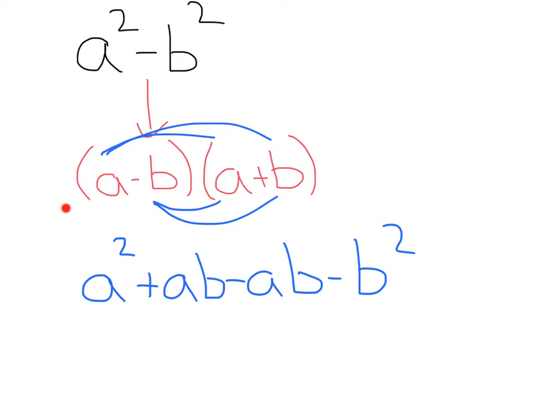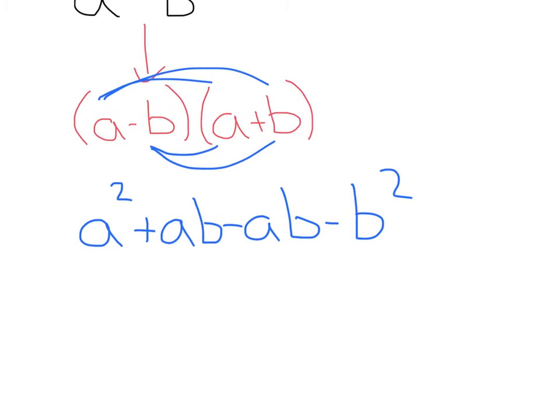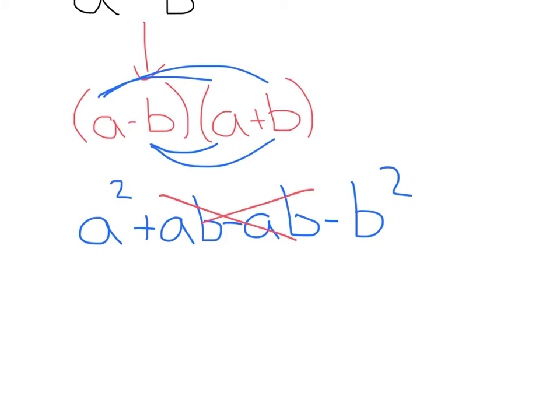And just to show you it works, we're going to distribute all of this out. That'll give us a squared plus ab minus b times a minus ab minus b squared. And we can see that these ab's cancel each other out, leaving us with just a squared minus b squared.